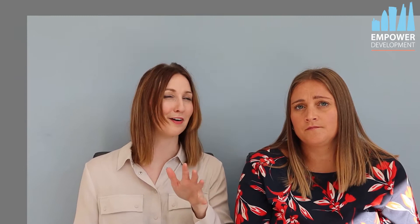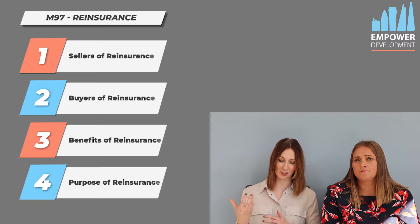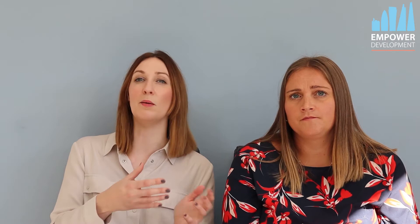There are 12 chapters altogether — it's one of the longest, if not the longest, diploma book there is, on a par with MO5. It first talks about the various sellers of reinsurance, the buyers of reinsurance, the benefits of reinsurance, and typically the purpose behind it.